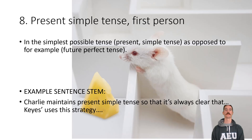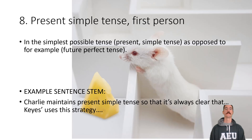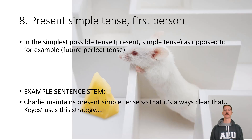This one is quite general and always useful: present simple tense, first person. The writing is in the simplest possible tense — present simple — as opposed to, for example, future perfect tense. Basically Charlie just says what he's going to do and is very clear about it. The correct phrase is present simple tense, or simply first person point of view. Finish this off: 'Charlie maintains present simple tense so that it's always clear that... and Keyes uses this strategy...'